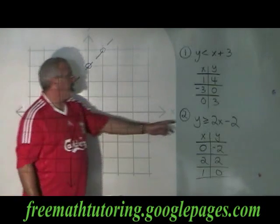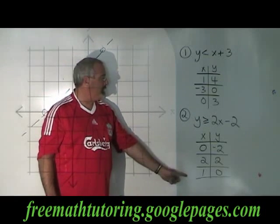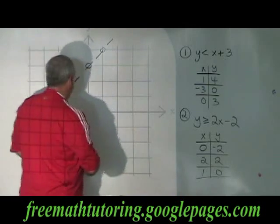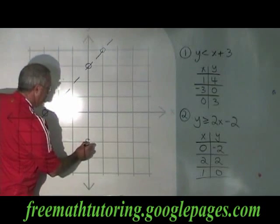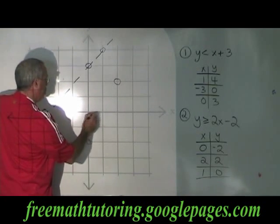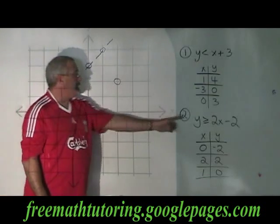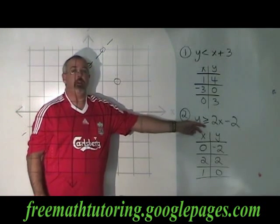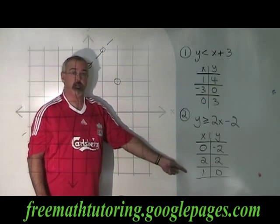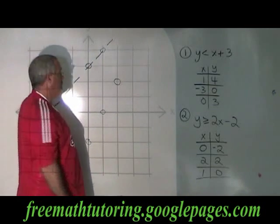In example 2, I have y greater than or equal to 2x minus 2, and I've made this table of values for it. I'm going to graph that now. I have (0, negative 2), (2, 2), and (1, 0). I draw a line through these points. I check my symbol and I see I have greater than or equal to. The fact that I have 'or equal to' means that these points are part of the answer, and I express that on the graph by drawing a solid line through those points.